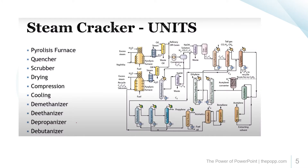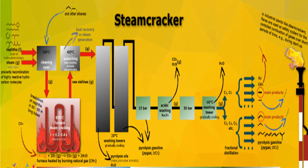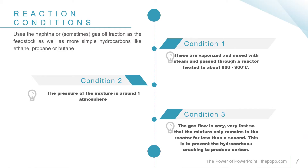Here we can have a clear view of the steam cracker units, which include the pyrolysis furnace, quencher, scrubber, dryer, and others. This is the steam cracker pathway, which starts from naphtha and ends up with the main products and pyrolysis gasolines.